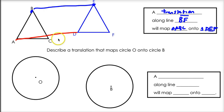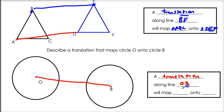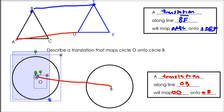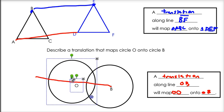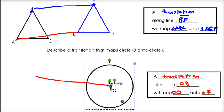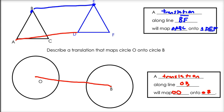Now with circles: describe a translation that maps circle O onto circle B. O is the center of one circle and B is the center of the other, so draw the line connecting them. A translation along line OB will map circle O onto circle B. If you follow that line, the circles map perfectly onto each other because they are congruent. Remember: if there's no coordinate plane, you have to pick a vector or a line to move along.